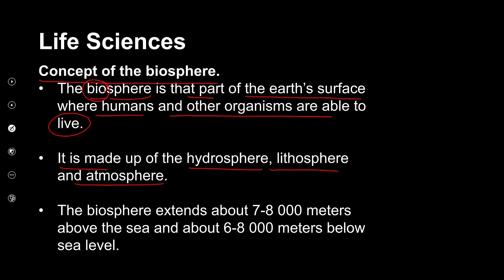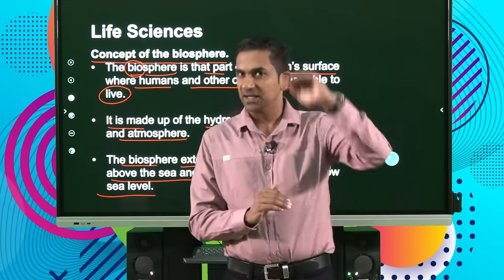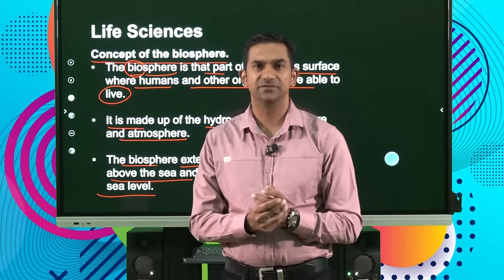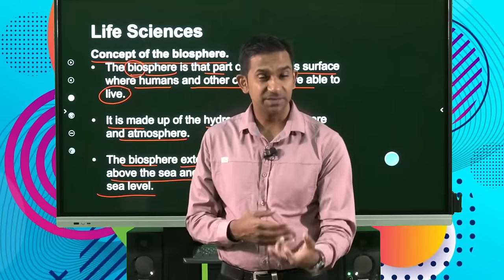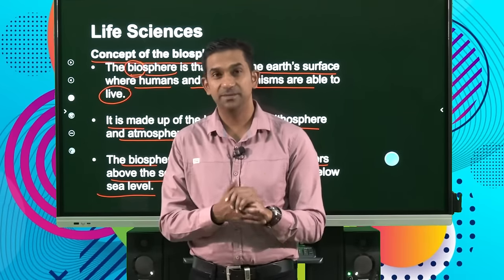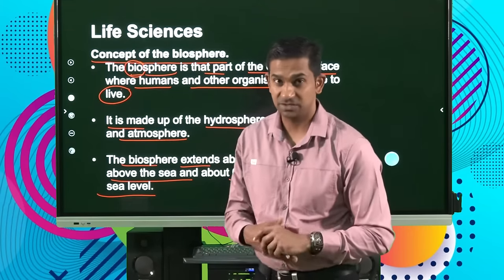We also know that the biosphere extends to about 7,000 to 8,000 meters above sea level, and around 6,000 to 8,000 meters below sea level. As we go up further into the atmosphere, there's a large variety of organisms that live there. Likewise, we can go into the surface of the earth, into the soil, into the deepest parts of the ocean — these are habitats that support life forms. So we refer to them as the biosphere, both in terms of the atmosphere as well as the aquatic parts of the environment.